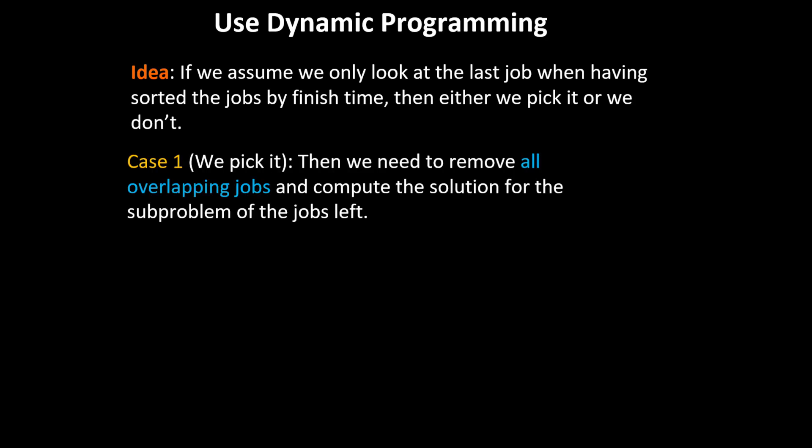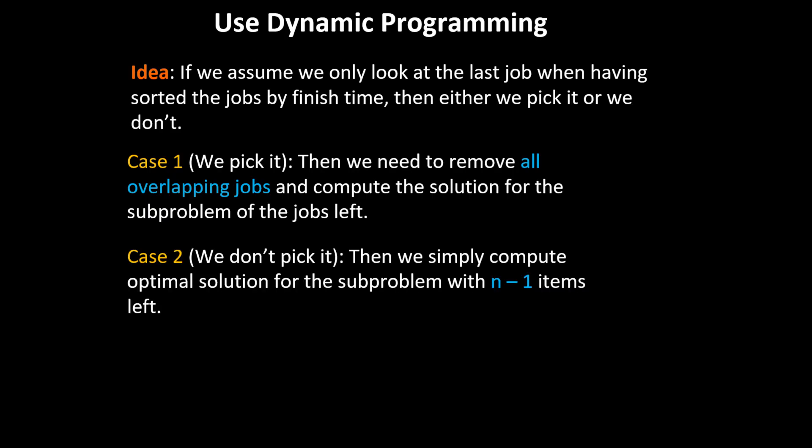In case one, we pick the last job — we need to remove all overlapping jobs and compute the solution for the sub-problem of the jobs left. In case two, we don't pick it — we compute the optimal solution for the sub-problem with n minus one items left. It becomes easy to see that if we have solved the sub-problems, we can examine the two choices: pick it or don't pick it. This suggests a dynamic programming approach.